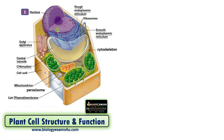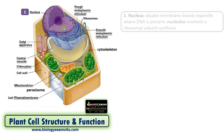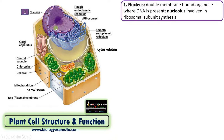Let's begin with the nucleus. As the plant cell is a eukaryotic cell, it has a true nucleus. The nucleus is a double membrane-bound organelle where DNA is present. Inside the nucleus there is an RNA-rich region called the nucleolus, which is involved in the synthesis of ribosomal subunits. The nucleus also has nuclear pores that help in the exchange of materials between the cytoplasm.